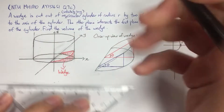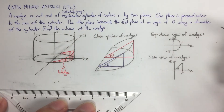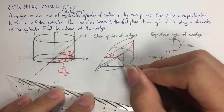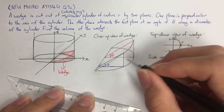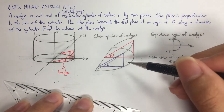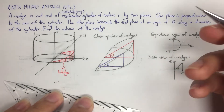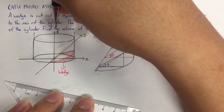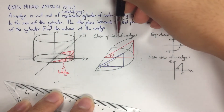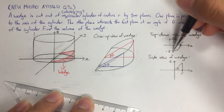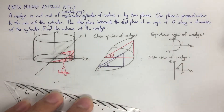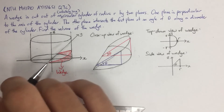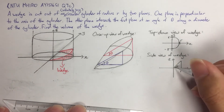One slice here, one slice here — which gives us the wedge shaded in red. If you look at the cylinder from the top, you'll see a circle, which means if you look at the wedge from the top view, you will see a semicircle of radius r. And if you look at the wedge from the side — along the y-axis — you will see a triangle.